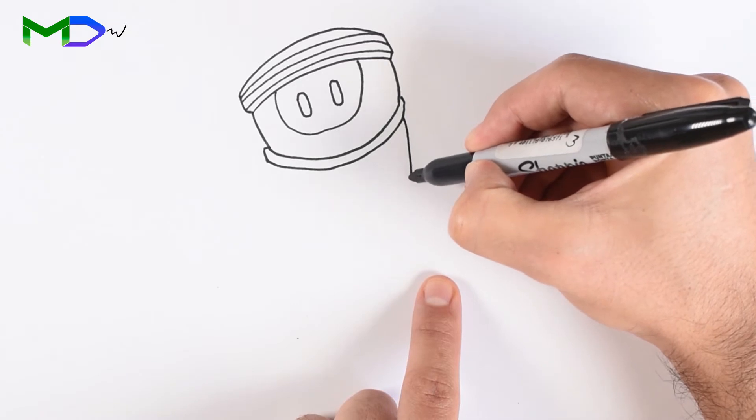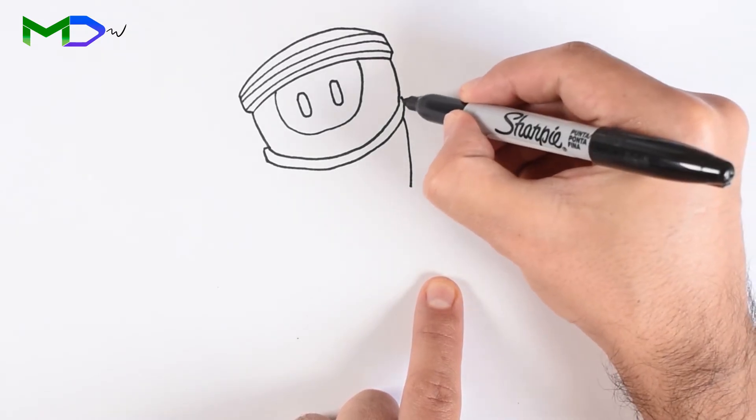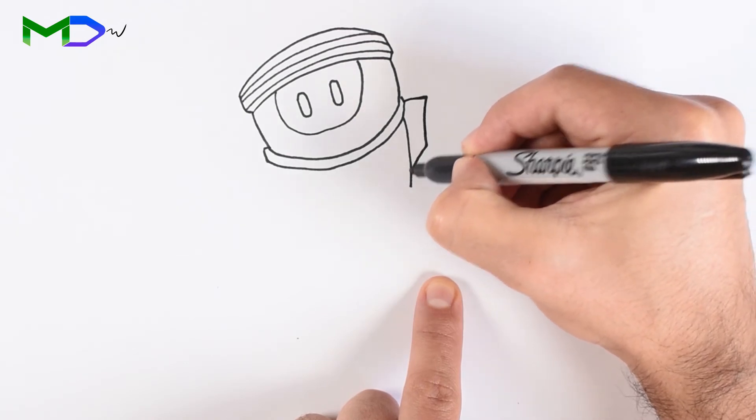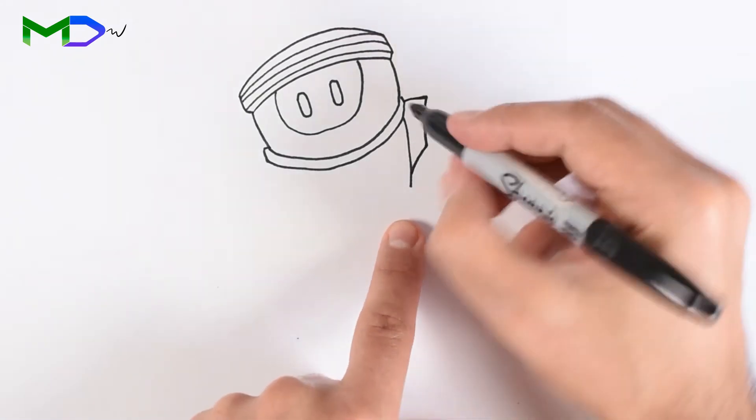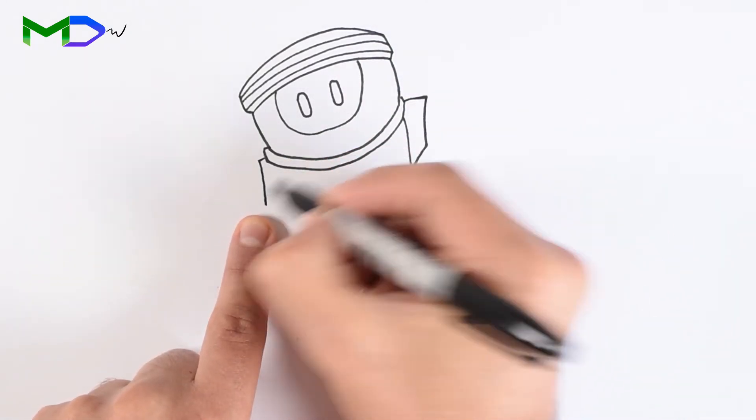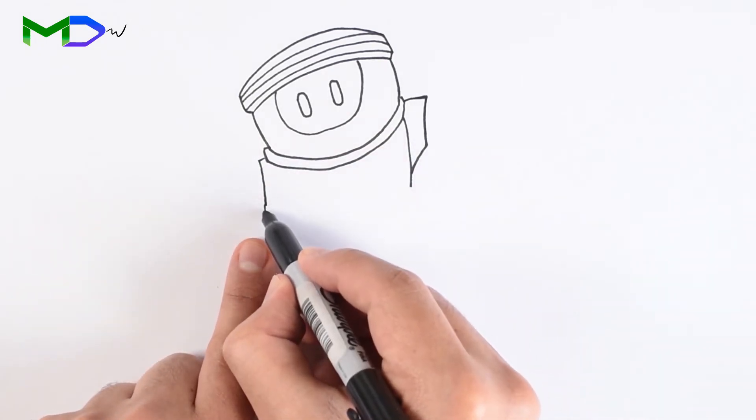Now from this point draw a vertical line to the side and then another one for the shoulder. Connect the bottom.